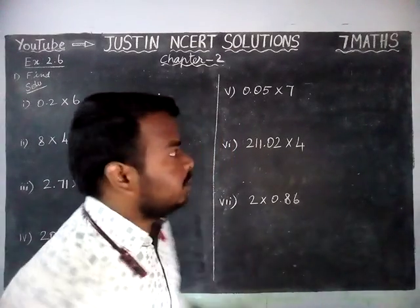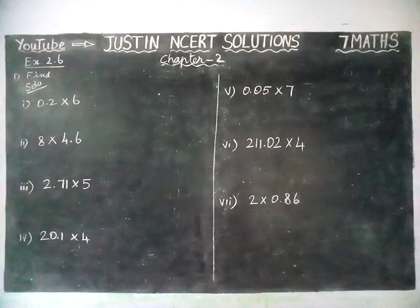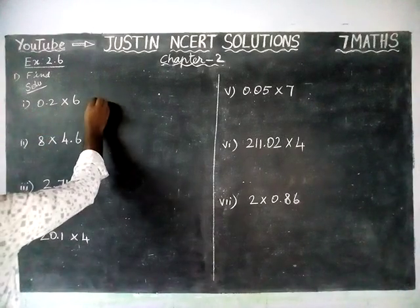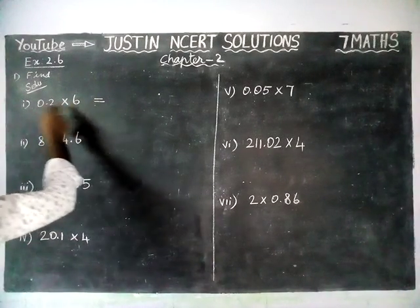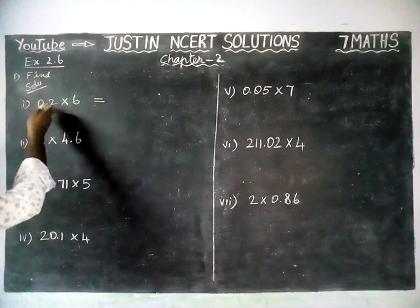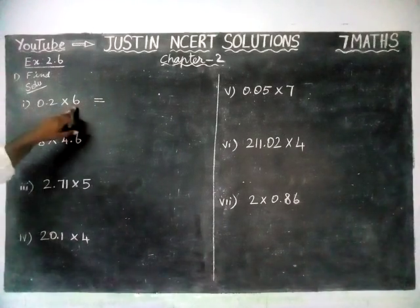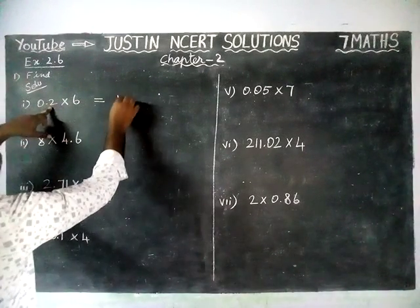Here we are going to multiply a decimal number by a whole number. The first question, 0.2 into 6. When we are multiplying with a decimal, first we have to consider this is a whole number, just to multiply the number alone. Don't bother about the decimal part. So now, 6 twos are 12.